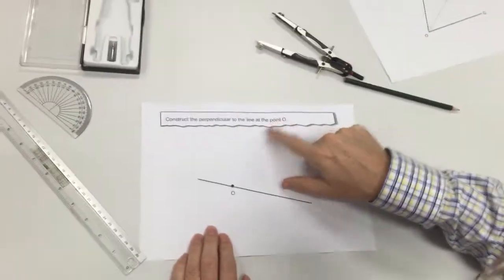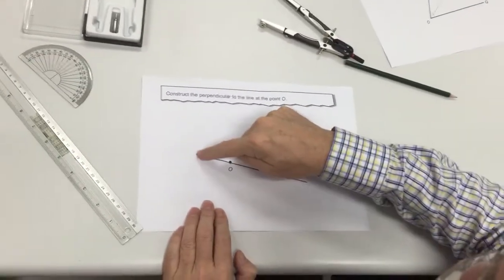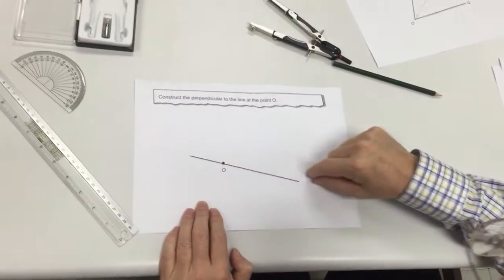What I've got to do is construct the perpendicular to the line at the point O. Notice the point O is actually not in the middle of the line.